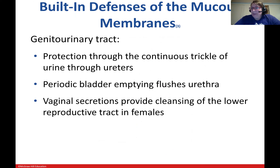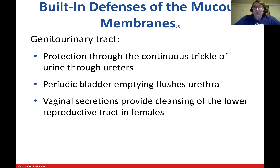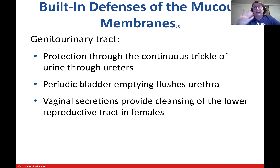The genitourinary tract has a continuous trickle of urine from the kidneys through the ureters down into the bladder, and periodic bladder emptying flushes the urethra. There's a liquid trail from the kidneys all the way out through the urethra. Vaginal secretions are also able to clear the vagina of unwanted bacteria — while the vagina has its own microbiome with bacteria that are supposed to be there, pathogens can in part be flushed out with vaginal secretions.